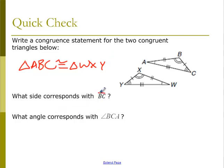So the side that corresponds with BC, and there should be a line above there, BC has one mark, XY has one mark.